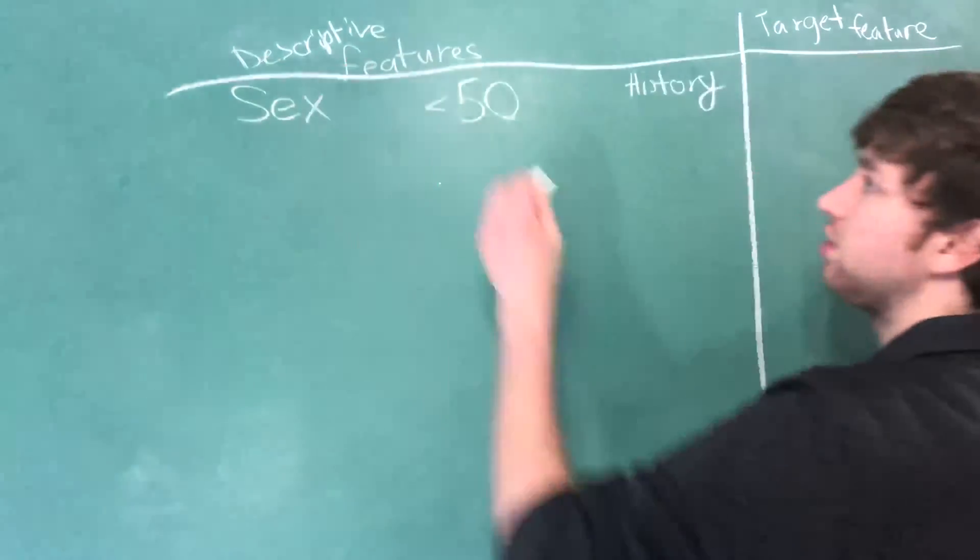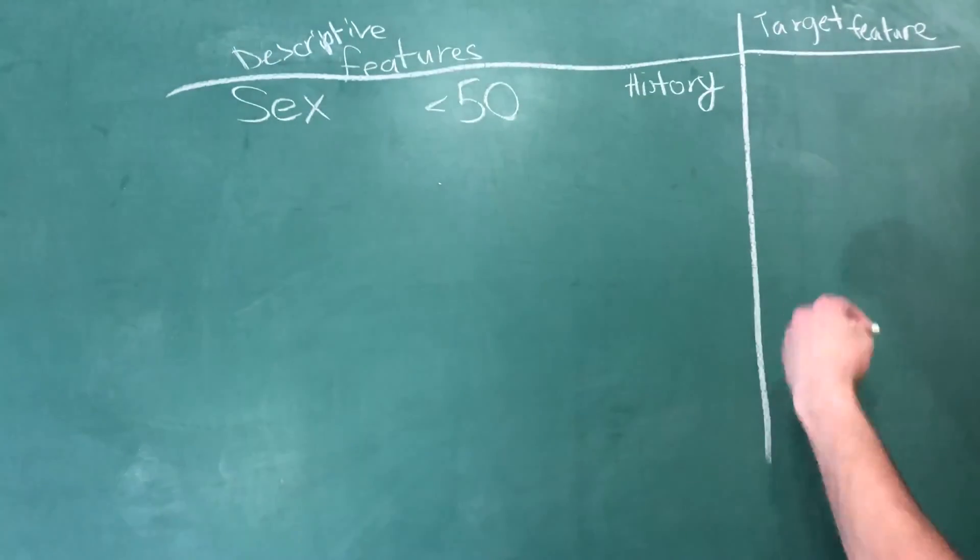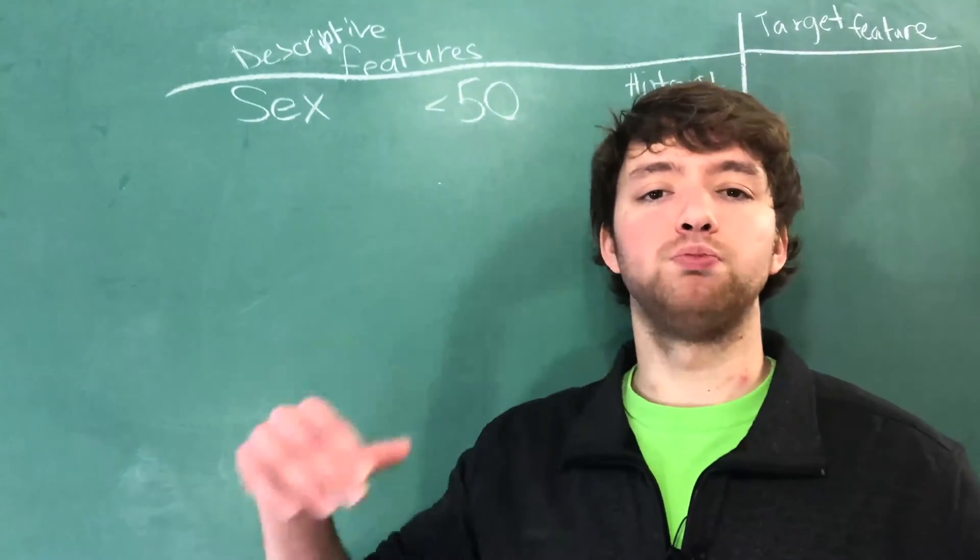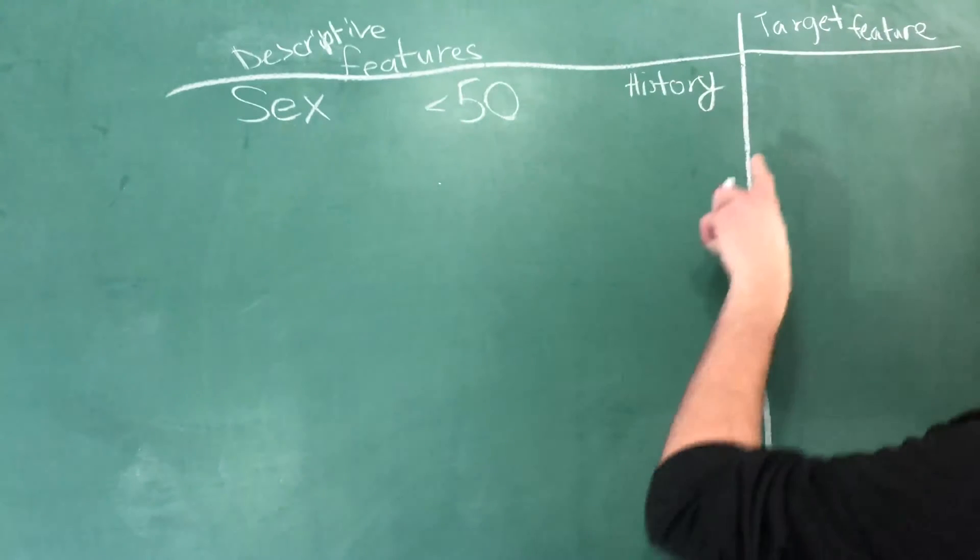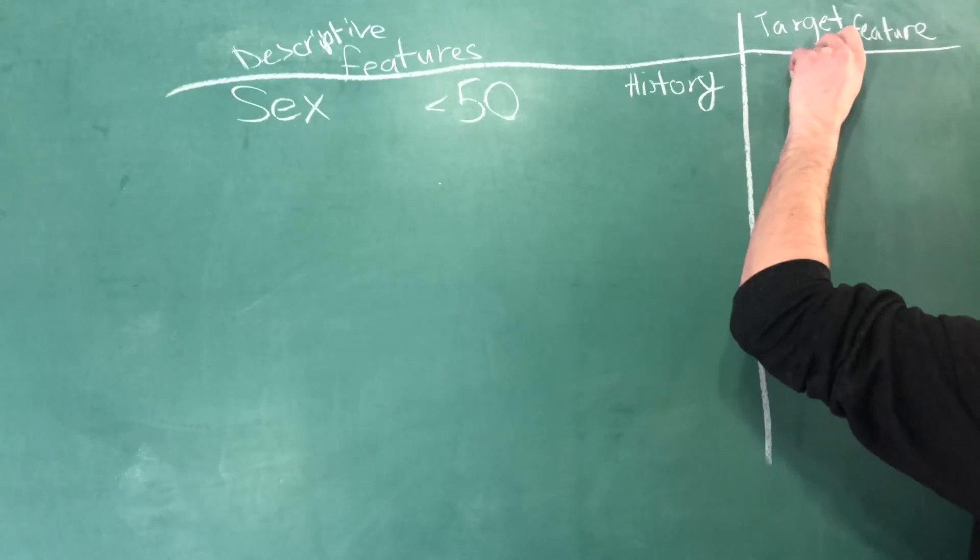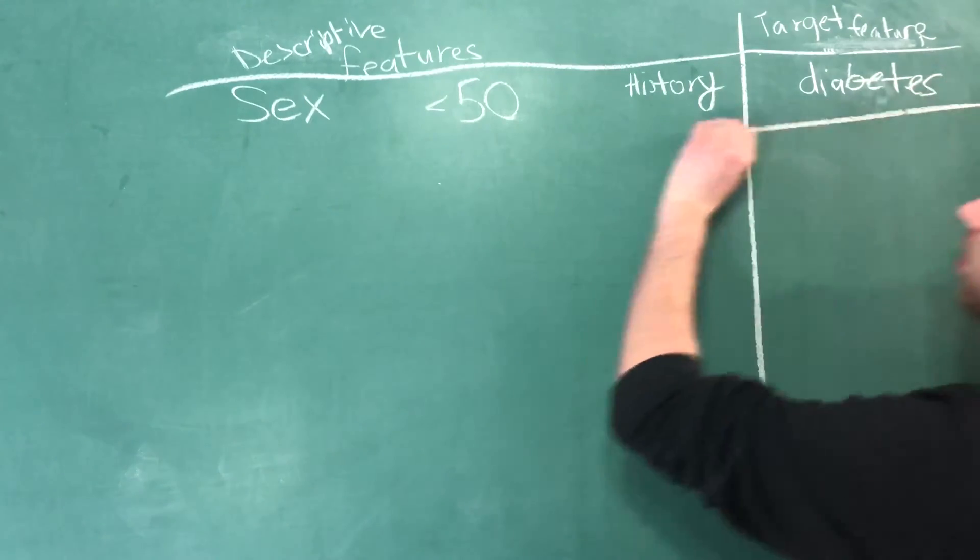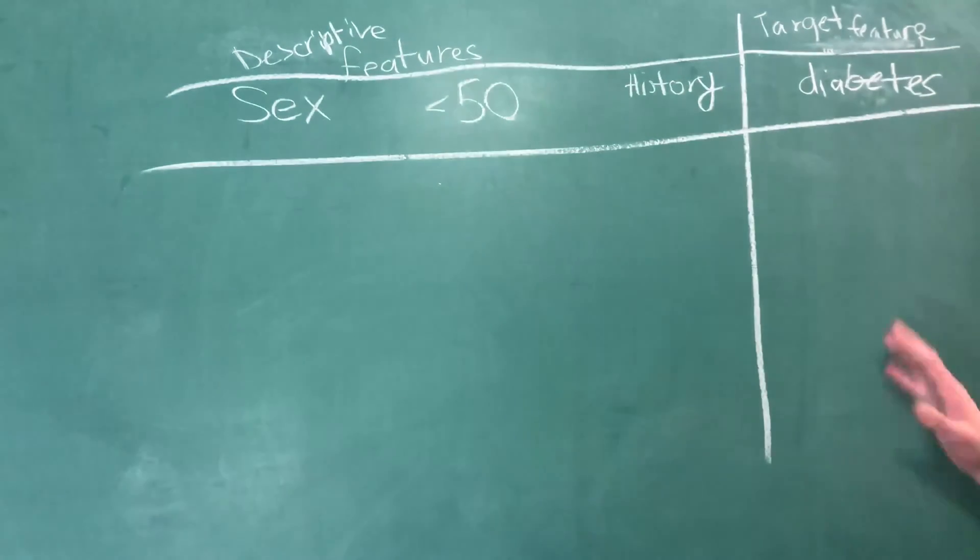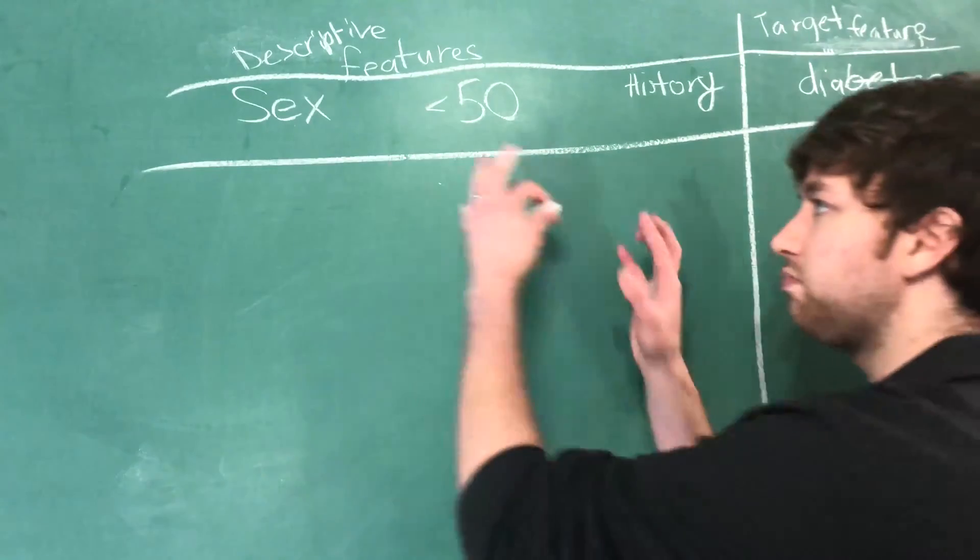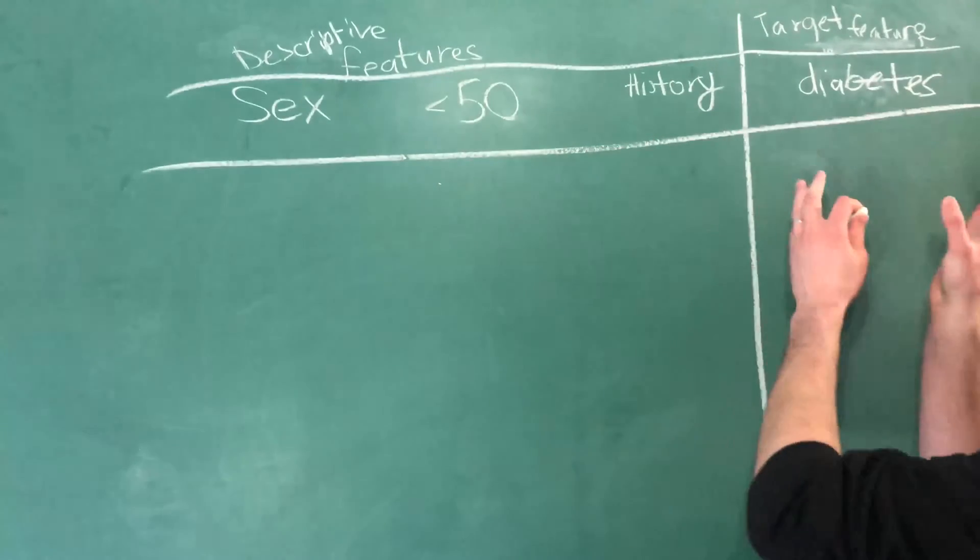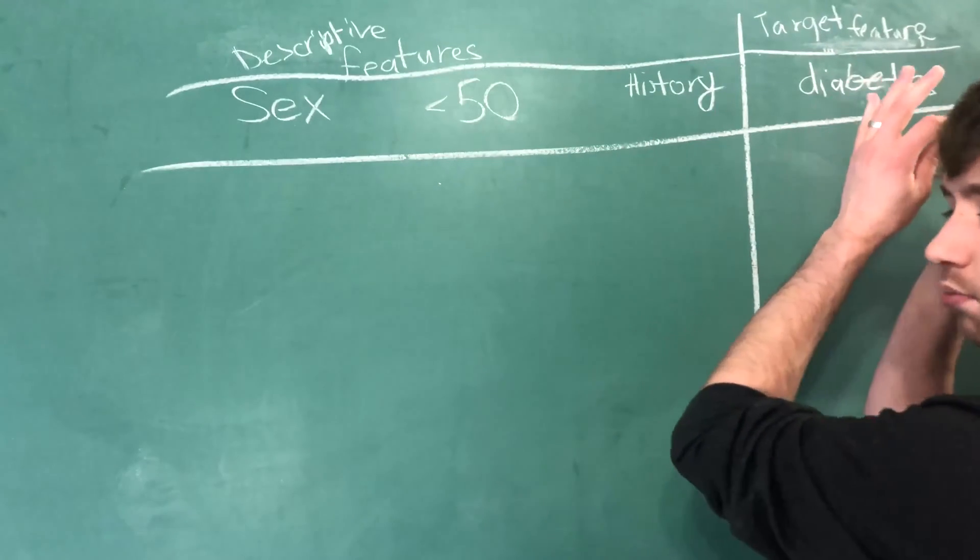The target feature is the result, what happened, what are we trying to predict. That is going to be stored in the target feature, which in this case is whether or not they had diabetes. So if we wanted to categorize our data, we would have descriptive features and a target feature. The descriptive features describe the thing and the target feature is what we're trying to predict for future instances.